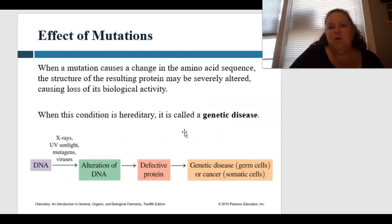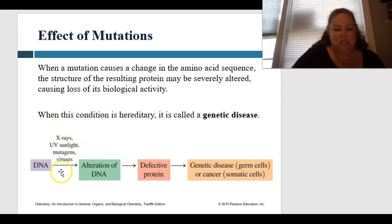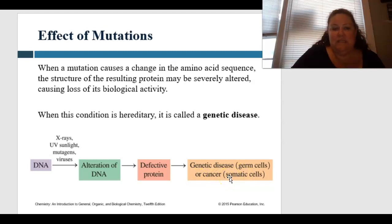So what's the effect of this? When a mutation causes a change in the amino acid sequence, the structure of the resulting protein may be severely altered, causing the loss of its biological activity. When this condition is hereditary, it's called a genetic disease. X-rays, UV sunlight, mutagens, and viruses can alter DNA to make a defective protein. When passed on through germ cells, that leads to genetic diseases; when limited to somatic cells, it could form cancer.